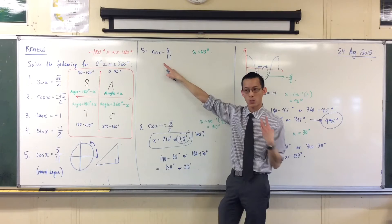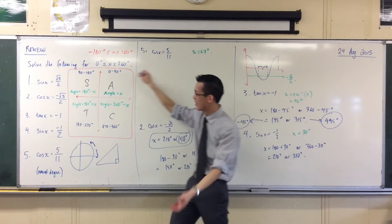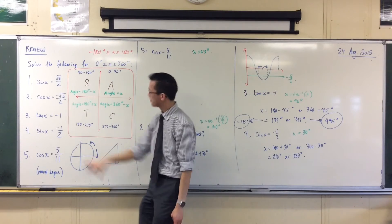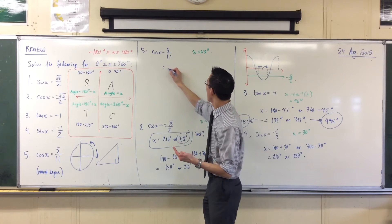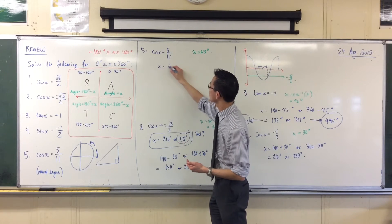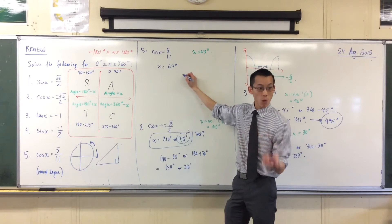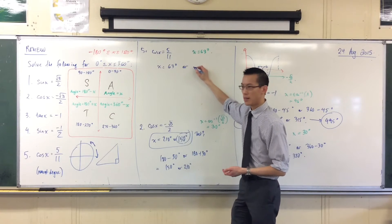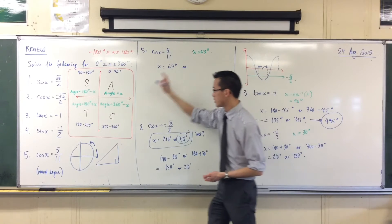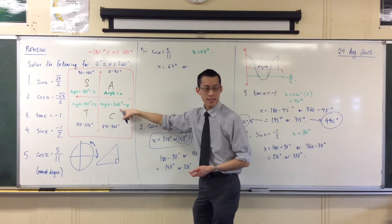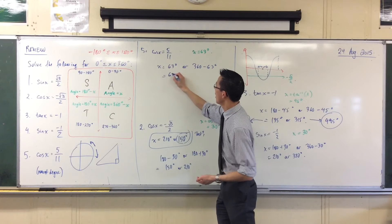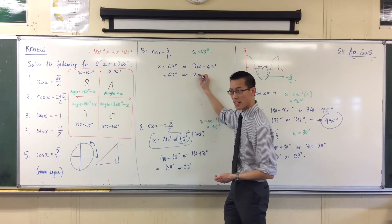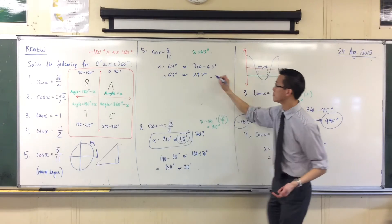If I change it to be cos x equals negative 5 over 11, then I'd be in the other two quadrants, okay? Alright, so therefore, being that I want first and fourth quadrant, I'm going to say x is equal to 63. Or, what's my fourth quadrant angle? Fourth quadrant here. 360, yeah. So it's going to be... Sorry, you've given me the answer already, haven't you? It's going to be 297, yeah, there we go.